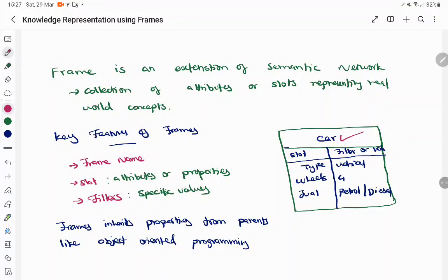The frame name is car and the slots are the properties - type, wheels, and fuel. Fillers are the values substituted for these attributes. So fillers consist of type of car as vehicle, number of wheels is 4, and fuel might be petrol or diesel. This is the representation we give for a single frame.